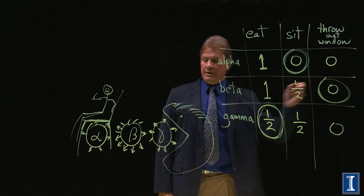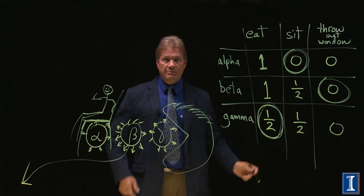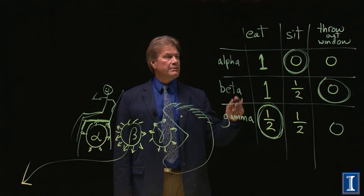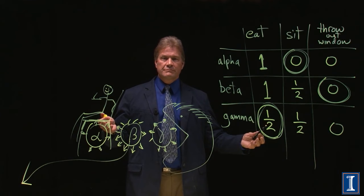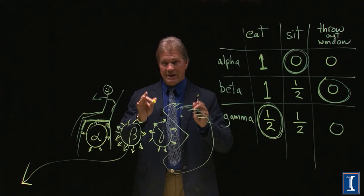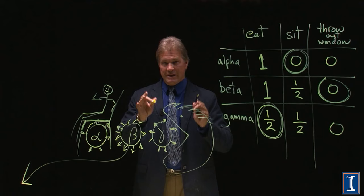Finally, betas, they're the one that gets tossed away. And this is how you minimize your dose. You would eat the gamma, sit on the alpha, and throw the beta out the window. Of course, remember, I'm not advising that you actually eat radioactive cookies. That's what you need to know about radiation.